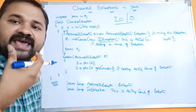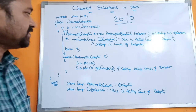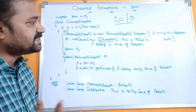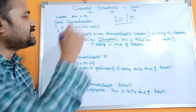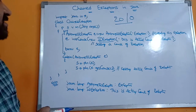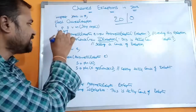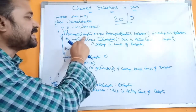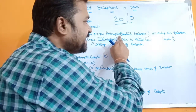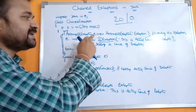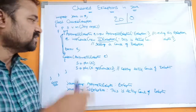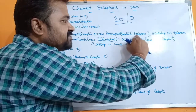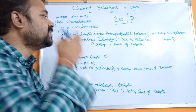We are using the IO package because in this program we are using IOException, and the IOException class is present in the IO package. The class name is ChainedException. Next, public static void main with String args — execution starts from the main method. Inside the try block, we create an ArithmeticException object: ArithmeticException e = new ArithmeticException("exception").